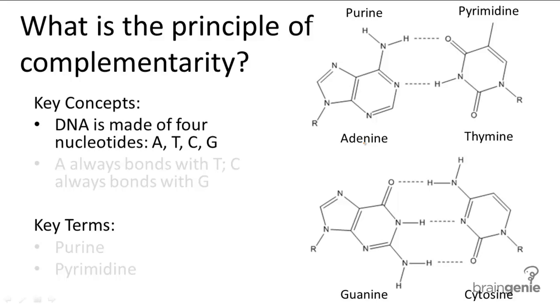There are four DNA nucleotides: A, T, C, and G, which stand for adenine, thymine, cytosine, and guanine, respectively.